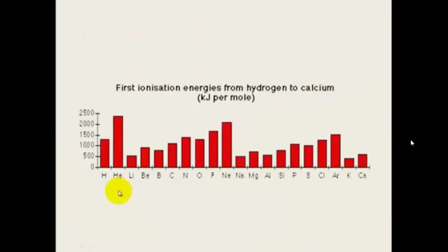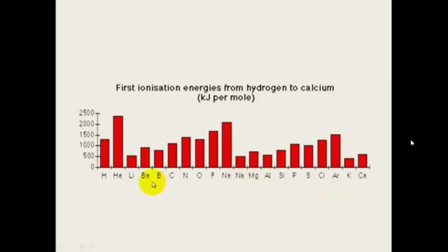Looking at the group 1 elements: lithium, sodium, and potassium. Notice that lithium has the lowest amount of energy for its first ionisation energy. These all only have one electron in their outside shell, so it doesn't take much energy to remove those because they want that full outer shell and want to get rid of that electron.